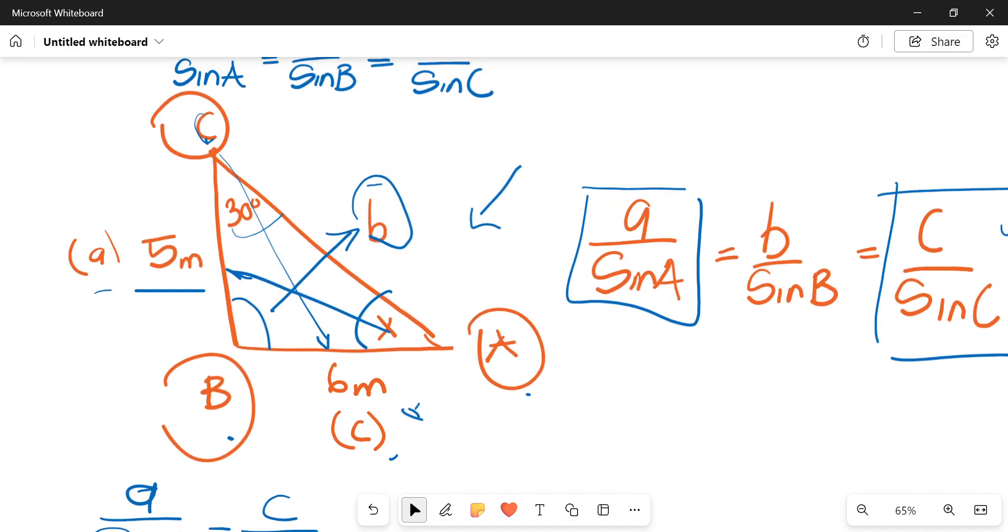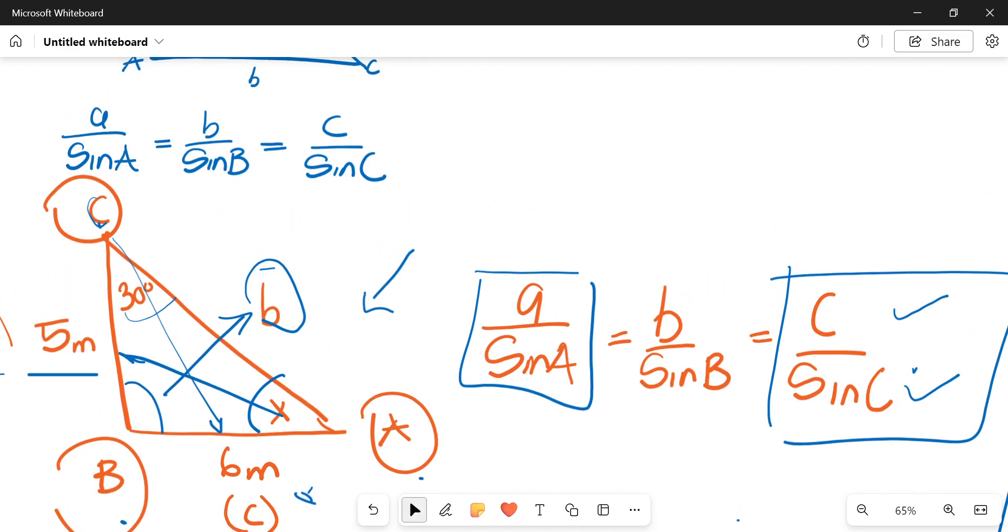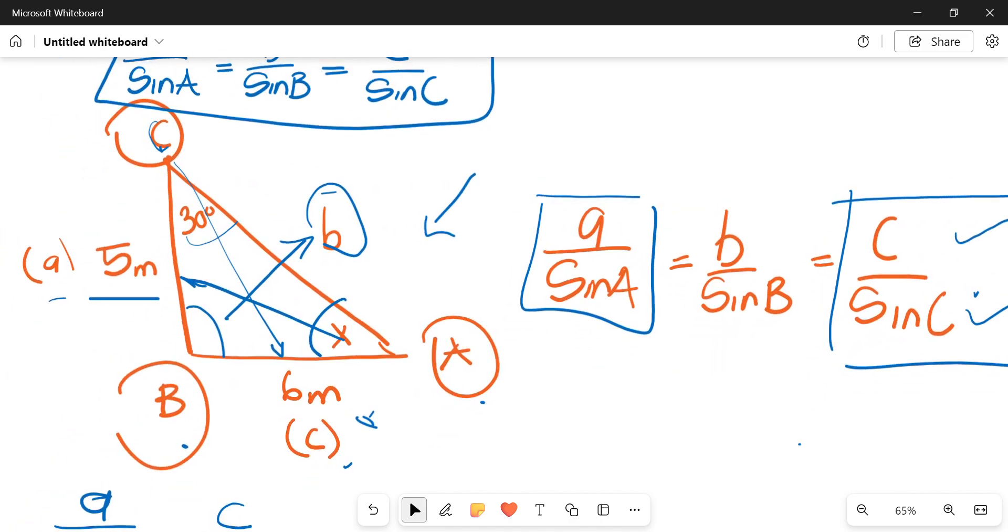From here, we know the length of A, length of C. So it already suggests that from our formulas for our sine rule, these are the formulas that we use. A over sine A is equals to B over sine B is equals to C over sine C. But you'd only need to use two at a time, so you don't need to worry about that many variables.